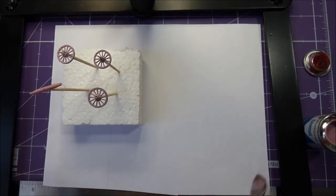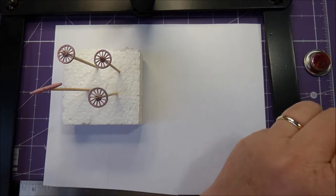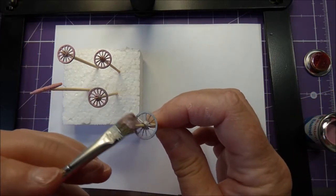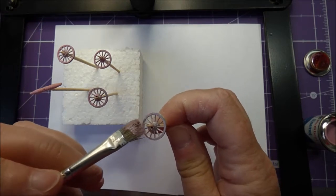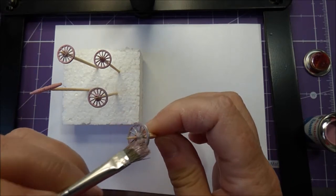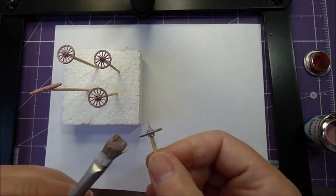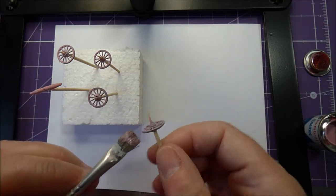Now you can paint the wheels and the handles. Paint both sides of the wheel and around the edge. Try to make sure that you don't get any paint in the gaps between the spokes, it's quite difficult to get it out.